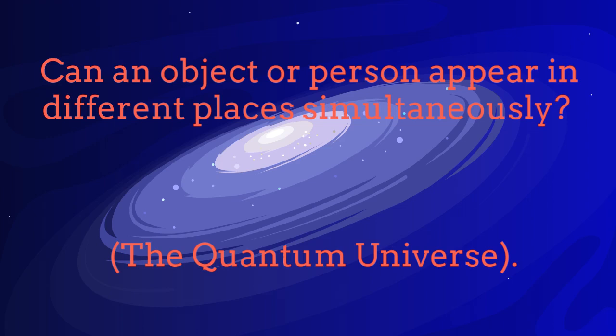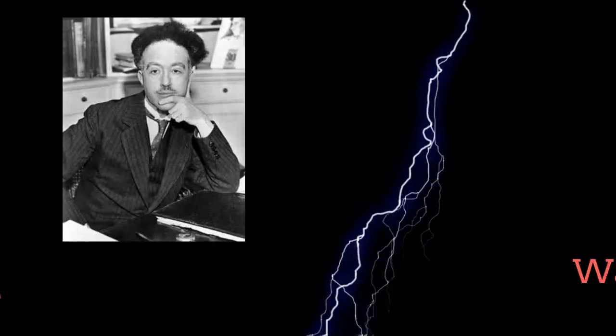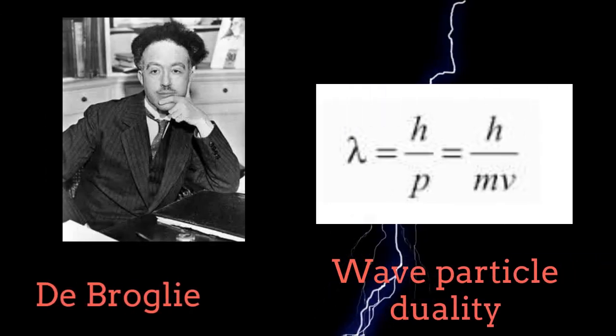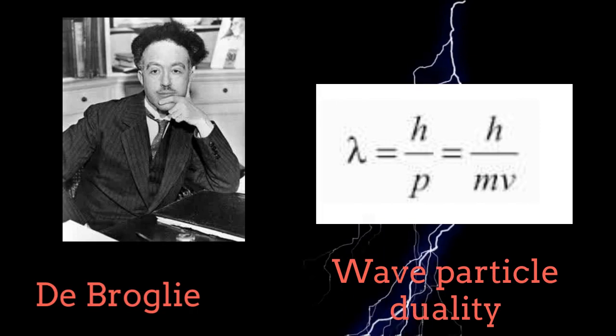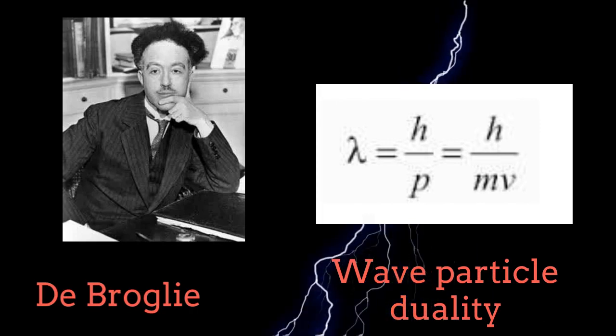Can an object or person appear simultaneously in different places? The quantum universe — let's explore it! One of the key concepts to consider is the de Broglie wavelength, discovered during the early days of quantum mechanics.